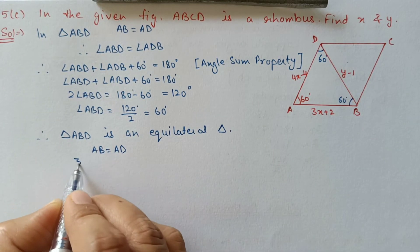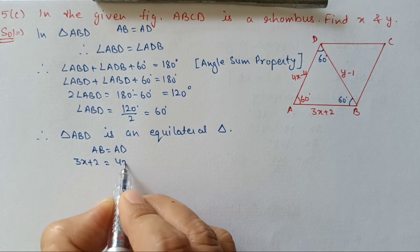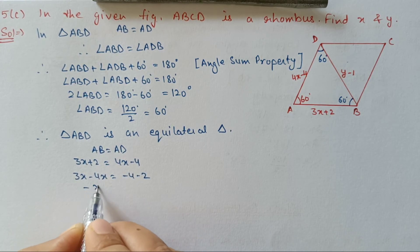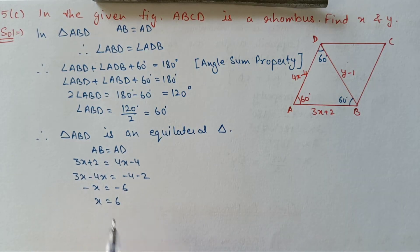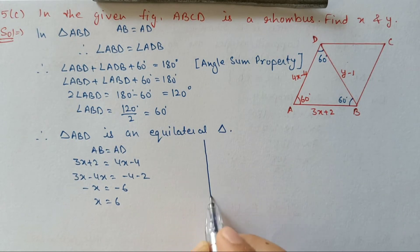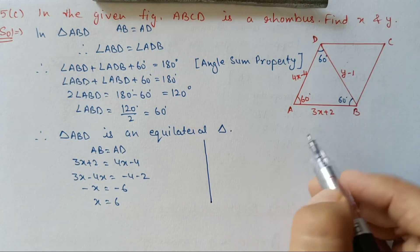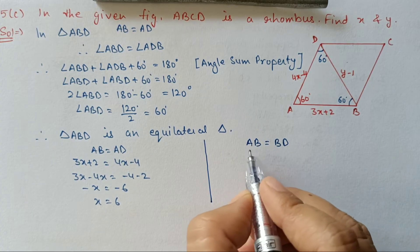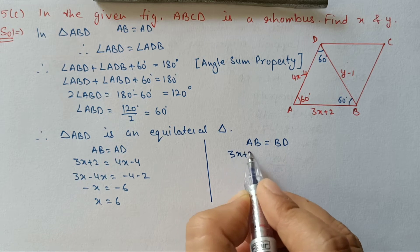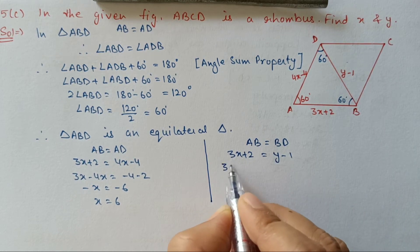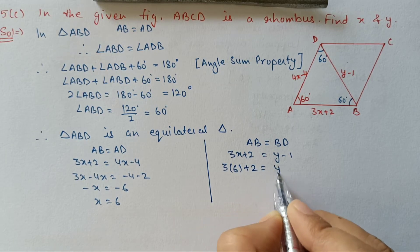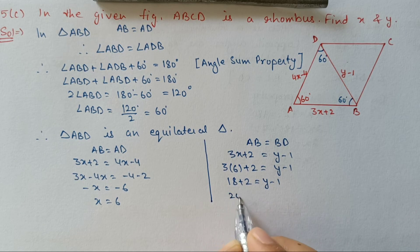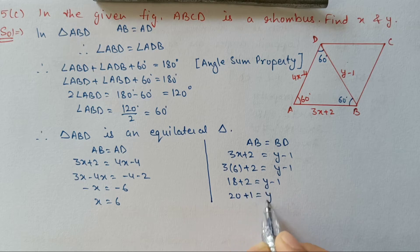From the figure, 4X minus 4 equals the angle, so we can find X: X equals 6. After getting X, we equate two sides. AB equals BD. Substituting X equals 6: 3 times 6 plus 2 equals Y minus 1, so 18 plus 2 equals Y minus 1, giving 20 equals Y minus 1, therefore Y equals 21.